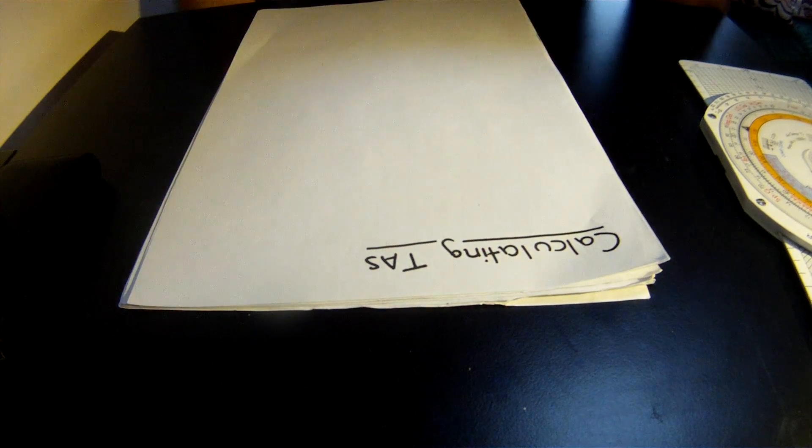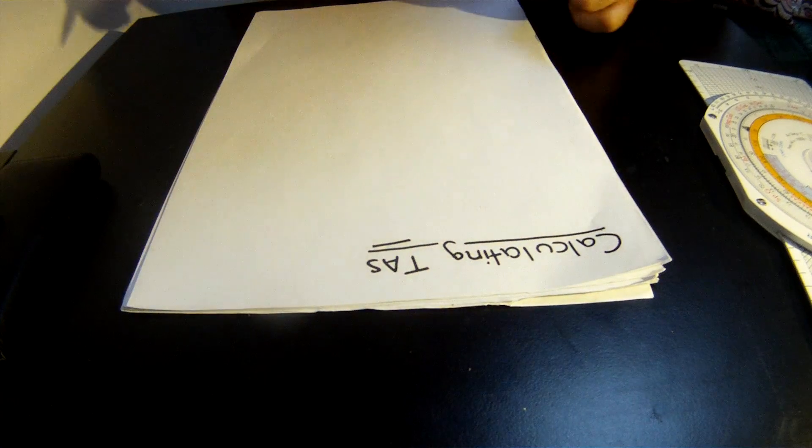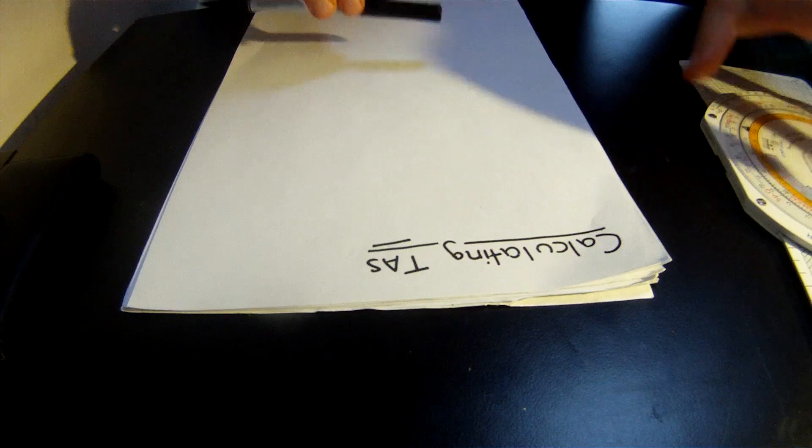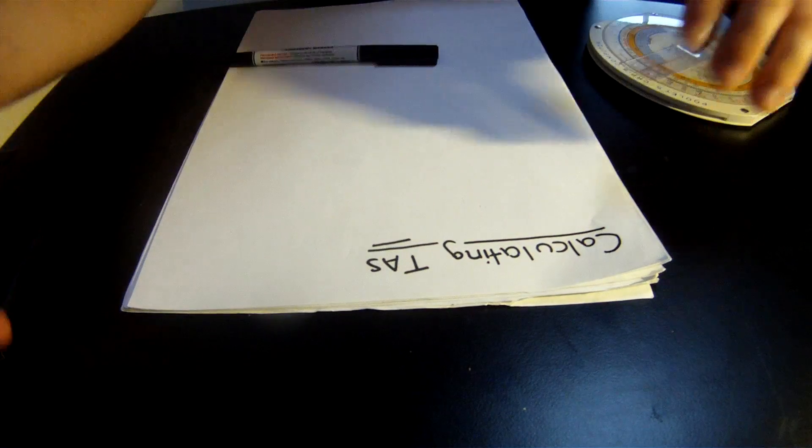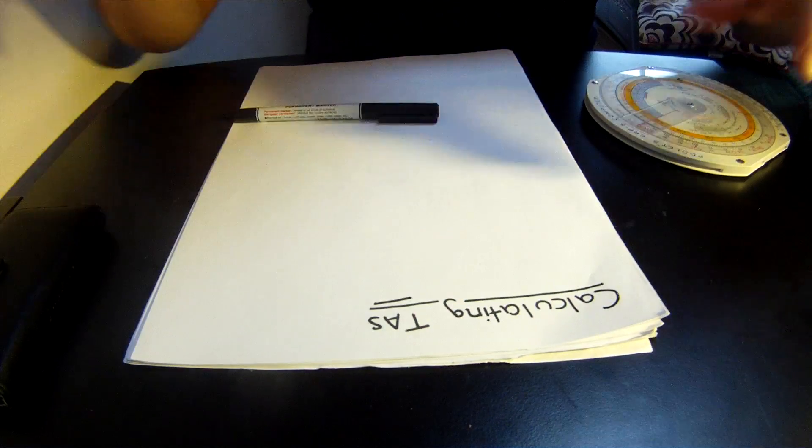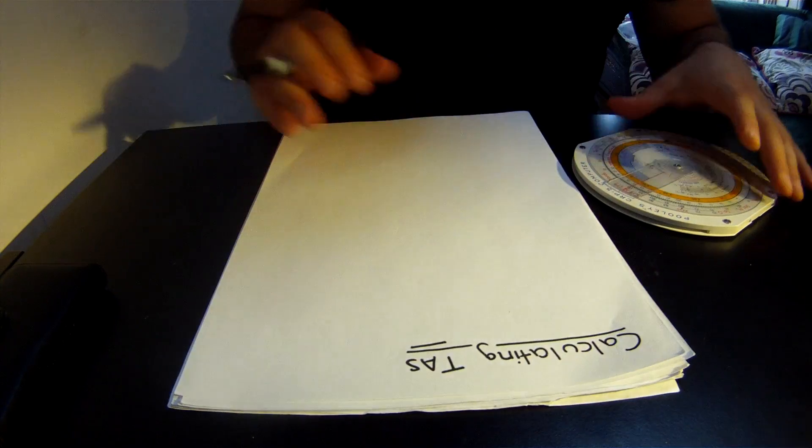We're going to talk about calculating true airspeed, or TAS, using the CRP-5. It's actually a lot easier than it looks. I'm going to remove the ruler side because we don't need this for this video.